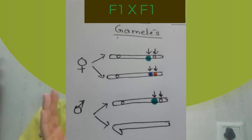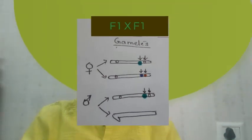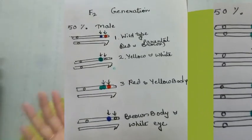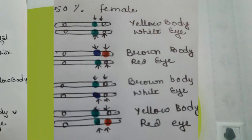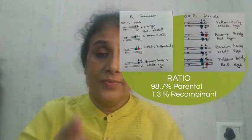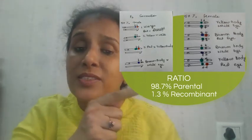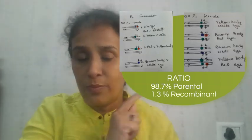When Morgan crossed the F1 female and F1 male, these were the gametes formed. In the F2 progeny, he again got 50% male and 50% female, with all different types of combinations present. But in terms of percentage: 98.7% parental and only 1.3% recombinant.